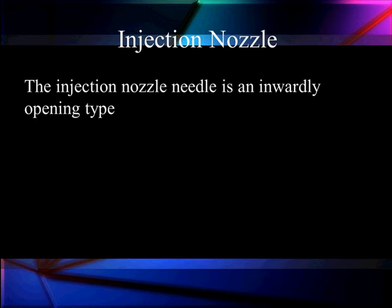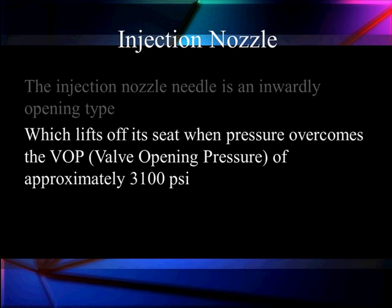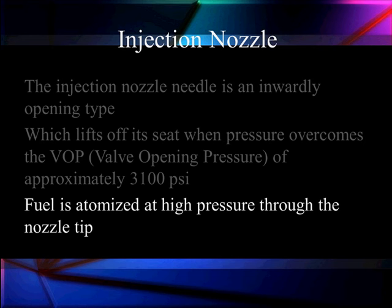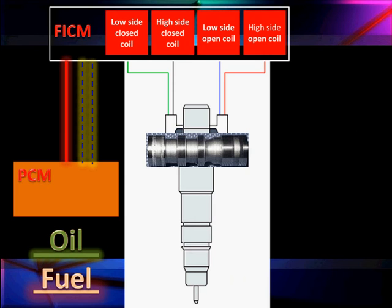The injector needle nozzle is an inwardly opening type. That means it's going to have lift off — which lifts off the seal when the pressure inside, the valve opening pressure we call it, is approximately 3,100 pounds. This is a number you're going to see very often in diesels. Many diesels use 3,100 pounds of injector opening pressure. So we have a very typical injector opening, but we got there by using oil pressure. The fuel is atomized at this high pressure and goes through the nozzle tip.